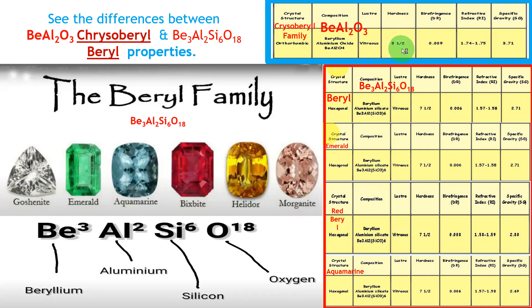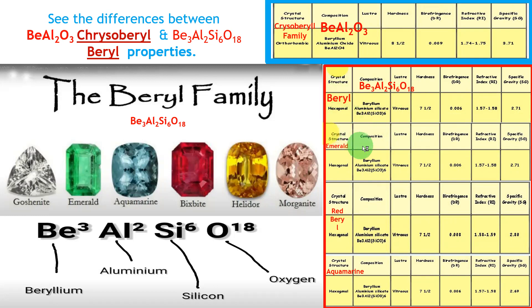Hardness of chrysoberyl is 8.5, whereas beryl is 7.5. Birefringence: the refractive index difference is 0.009 for chrysoberyl and 0.006 for beryl. Both are biaxial with two RI values. Then specific gravity — see the difference. In the beryl family, the crystal shape is hexagonal. Emerald is hexagonal, red beryl is hexagonal — all beryl family gems are hexagonal.